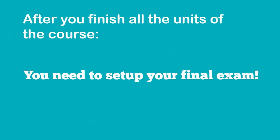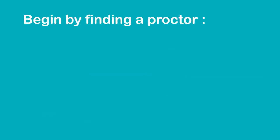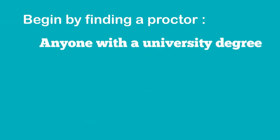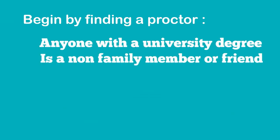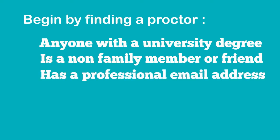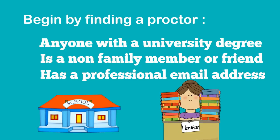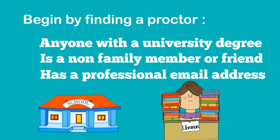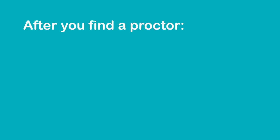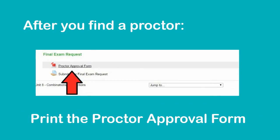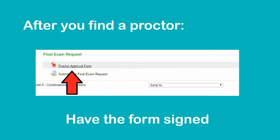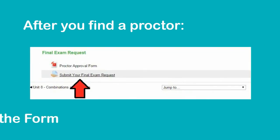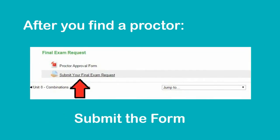After you finish all the units of your course, you need to set up your final exam. Begin by finding a proctor. Your proctor can be anyone with a university degree who is a non-family member or friend that has a professional email address. Most students set up their final exam at their current school or local library. After you find a proctor, you need to print the proctor approval form, have it signed, and submit the form for approval.